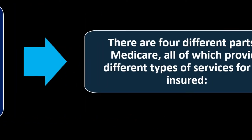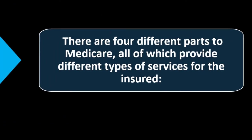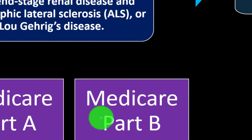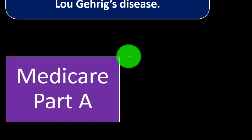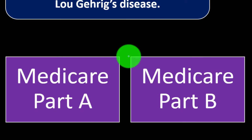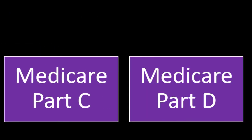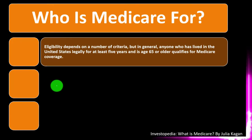There are four different parts to Medicare, all of which provide different types of services for the insured: Medicare Part A, Medicare Part B, Medicare Part C, and Medicare Part D.